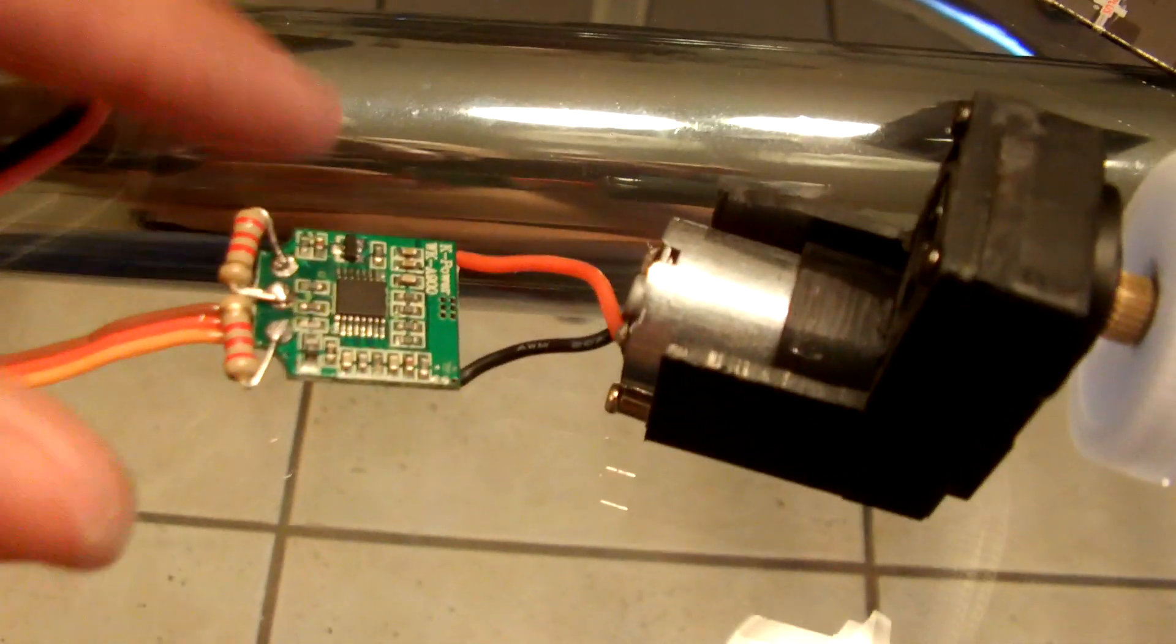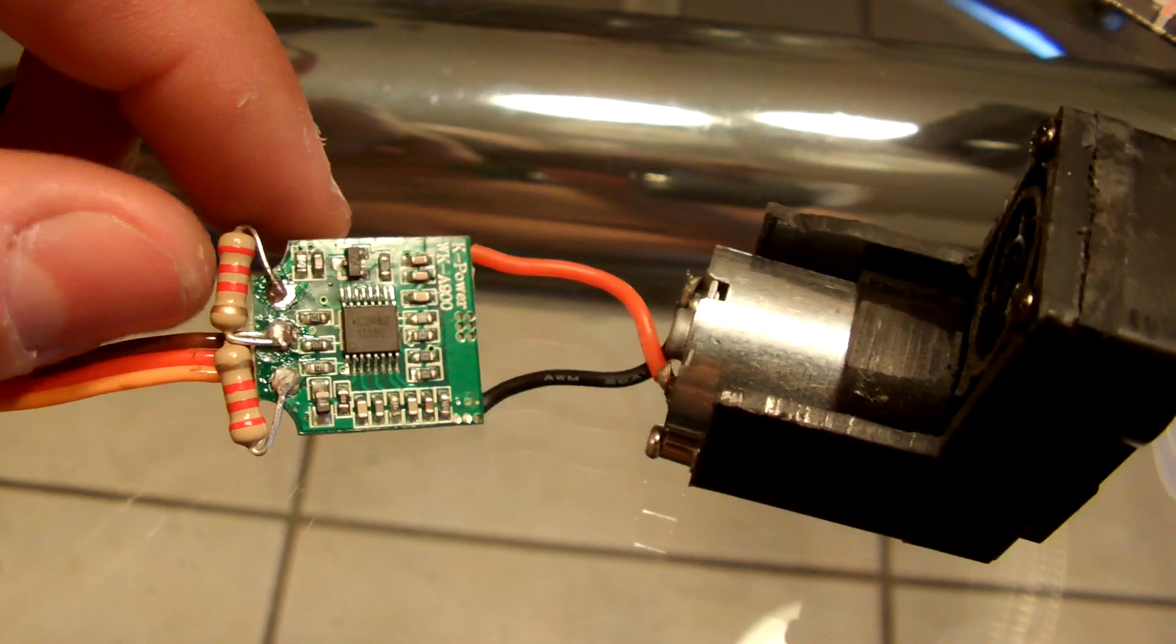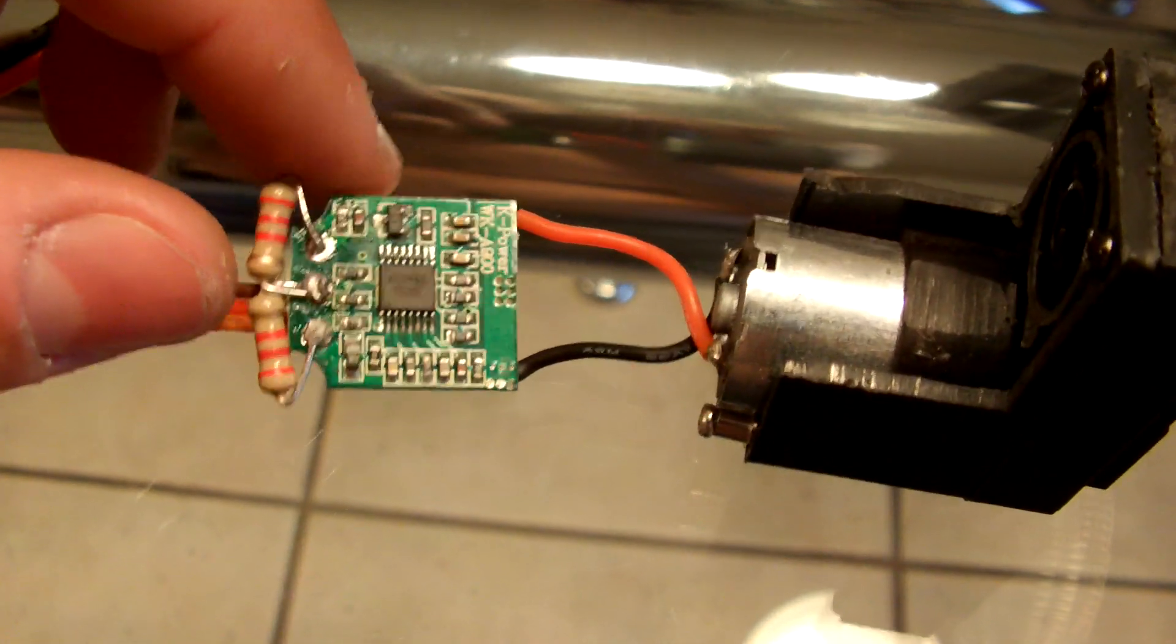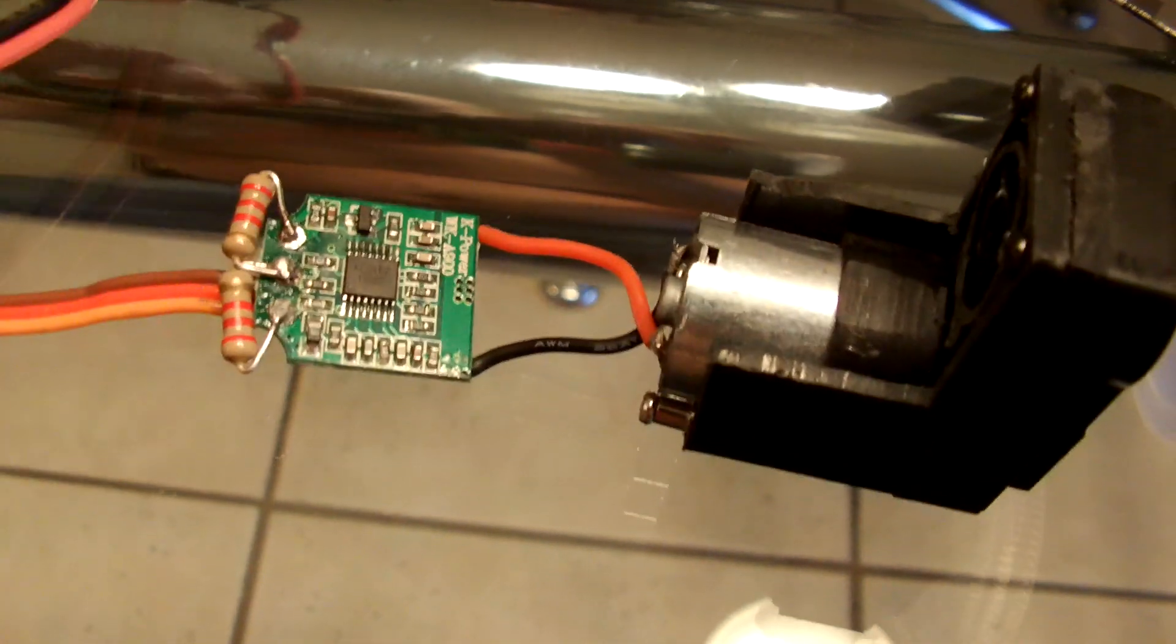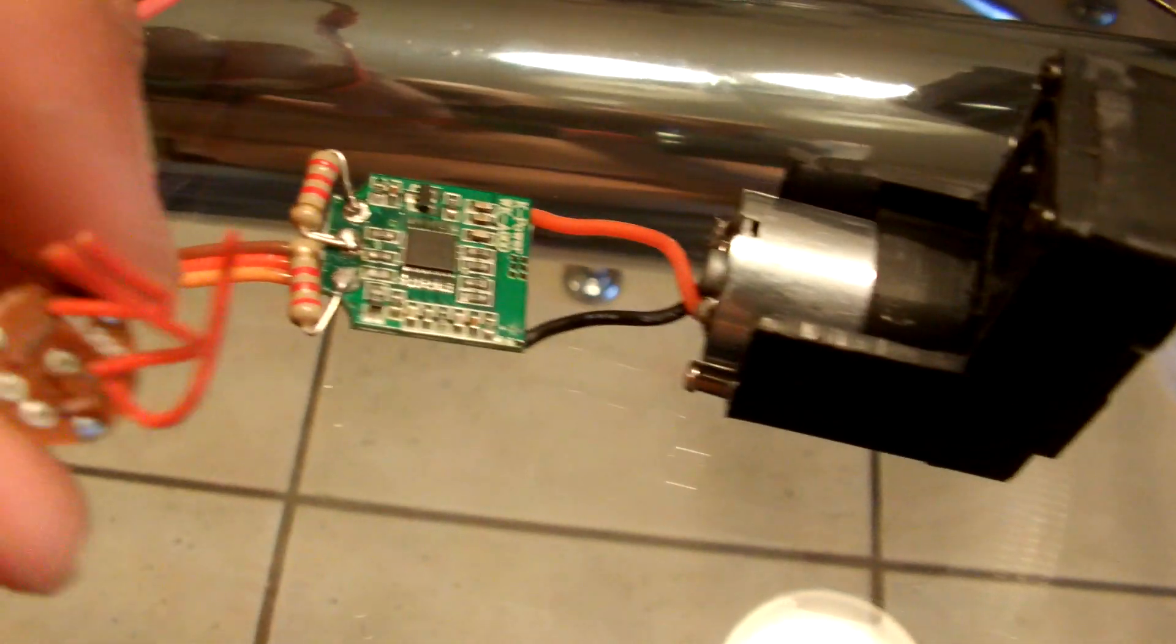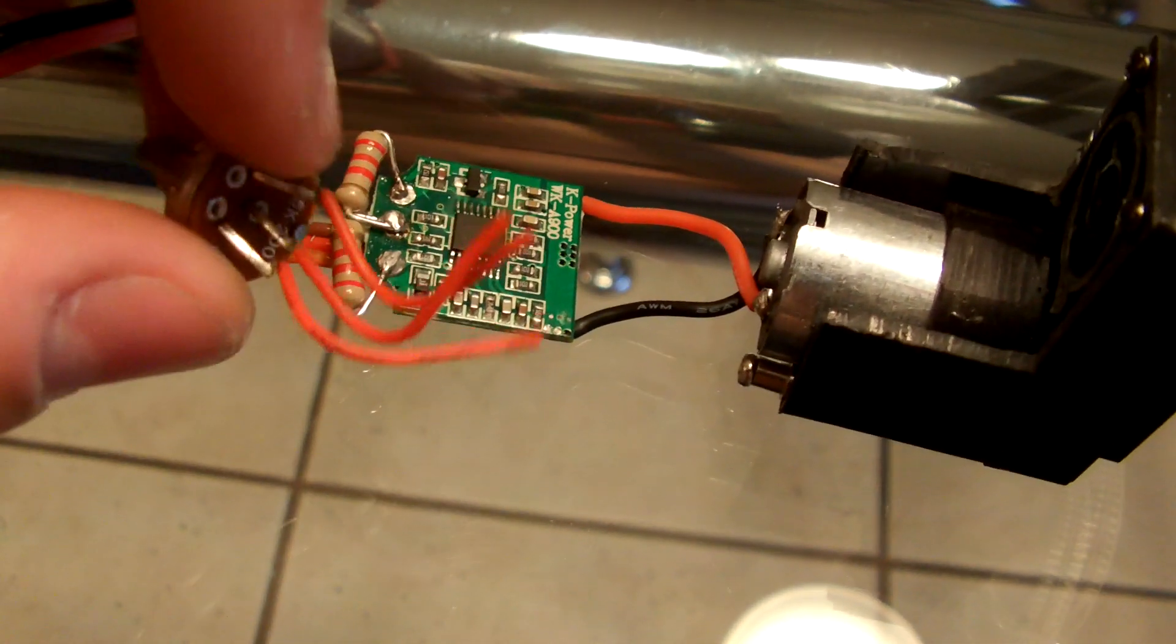This right here is kind of like a version 2 of what you can do. Now, you're going to want to put two resistors in here. They're going to go on the three wires that usually go to your potentiometer, your pot. Those three wires,